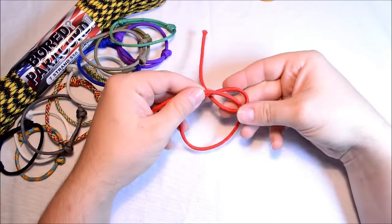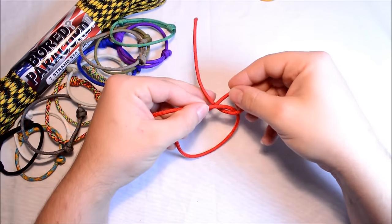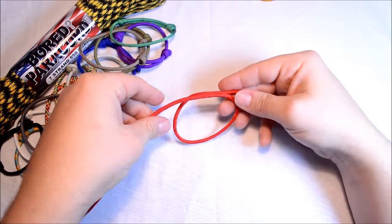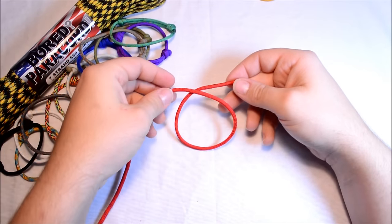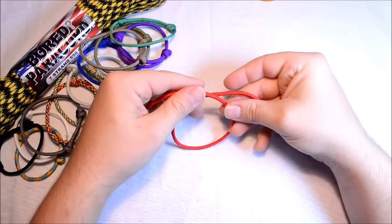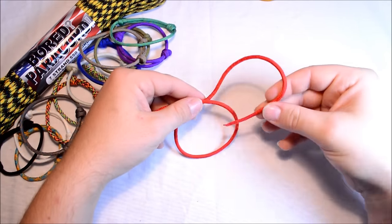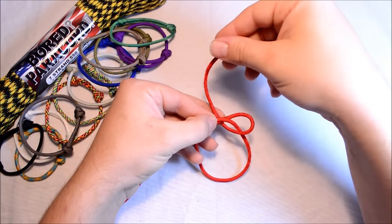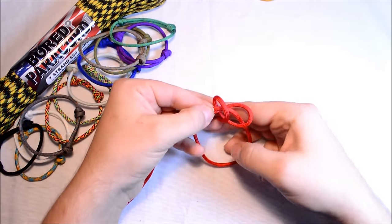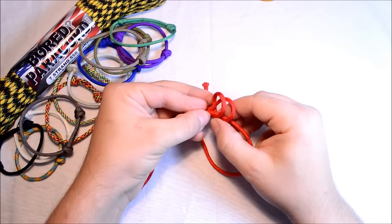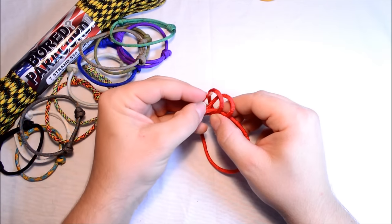The right cord goes down through just like that. Create another loop, go down through, so now you have your two loops here. Then you're going to take your end and go right through the center. Let me zoom in on this for you.